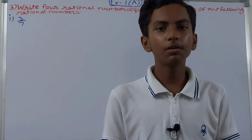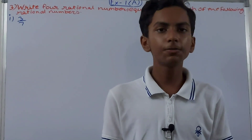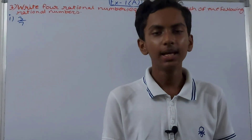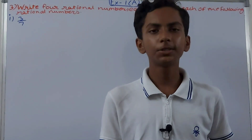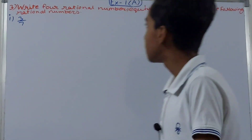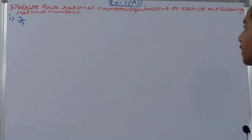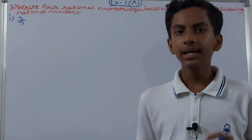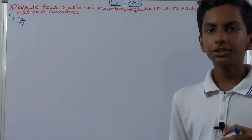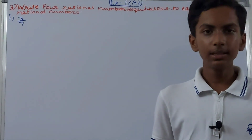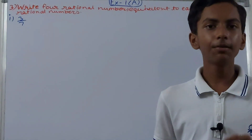Welcome back to my YouTube channel Lockhe Learning. In this video we are going to solve Class 8 Chapter 1 Rational Numbers, Exercise 1A, Question 3. It says: write 4 rational numbers equivalent to each of the following rational numbers. So we have to write the equivalent rational numbers of the given rational numbers.